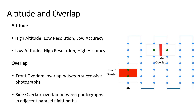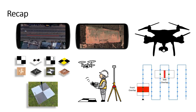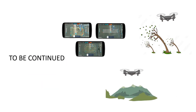With this, we come to the end of this video. Let's have a quick recap. First, we discussed KML file creation, followed by GCP creation, the RTK and PPK methods, the camera requirements, and finally the drone controls. In the next video, we will see how to execute the mission using different mission types and how to fly the drone in different terrains.